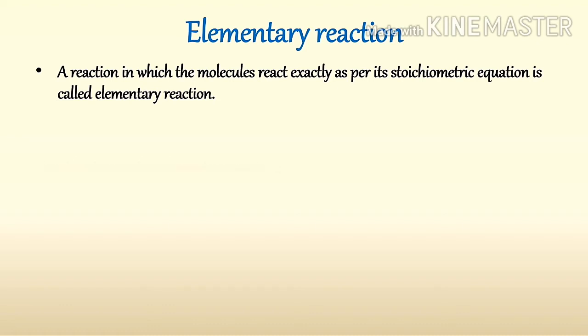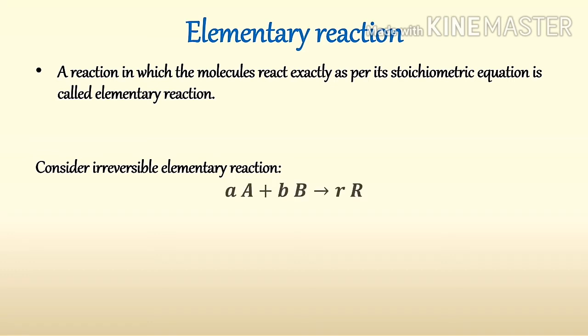Consider the irreversible elementary reaction: a·A + b·B → r·R. This reaction is also called a stoichiometric equation. From this equation, to produce r moles of R, a moles of A and b moles of B are required. If this reaction is elementary, a moles of A and b moles of B will react to produce r moles of R.